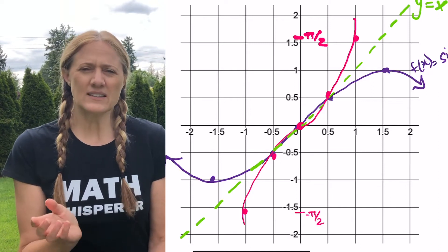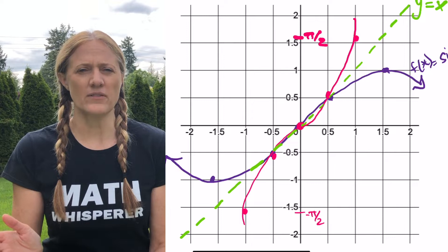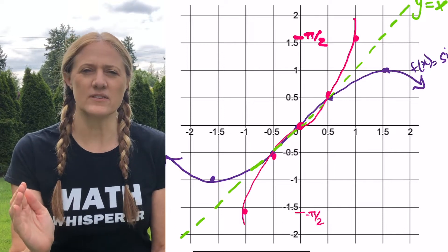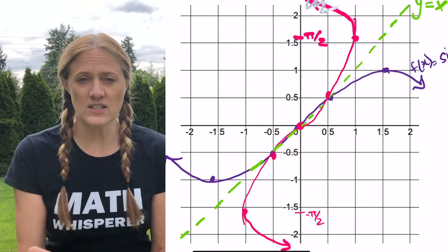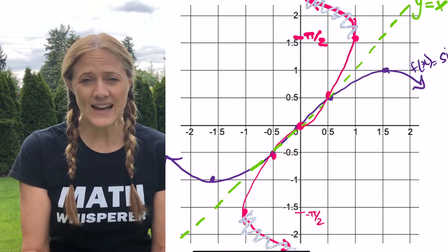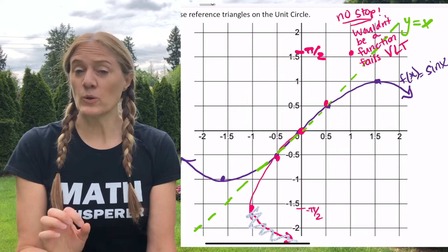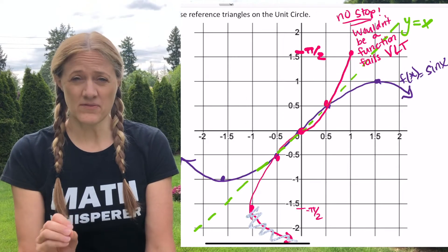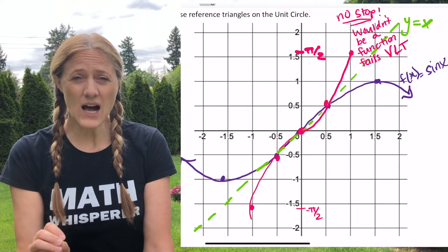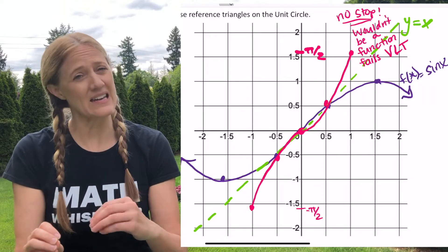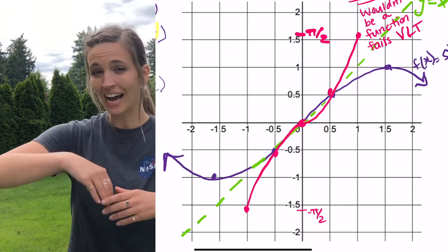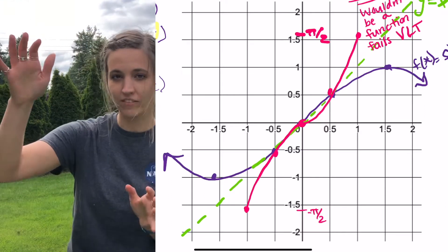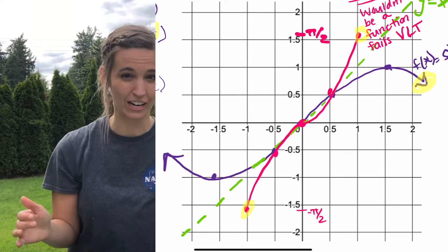Sine continues on forever. Let's continue on the inverse of sine. Wait a second — this is no longer a function if I continue it on, because it wouldn't pass the vertical line test. So we need to erase that part; that would not be a function. So we have to stop on the y-axis at negative pi halves to pi halves. We have sine and its inverse now graphed, and where sine continues, the inverse has to stop so that it can actually be a function.